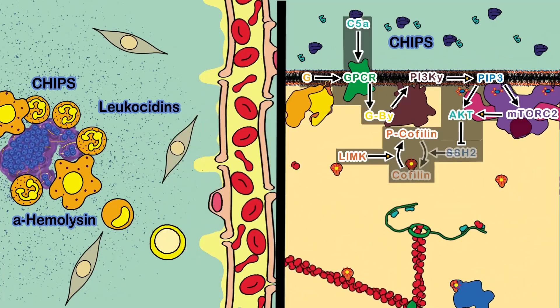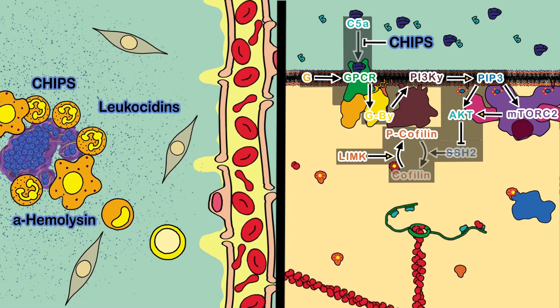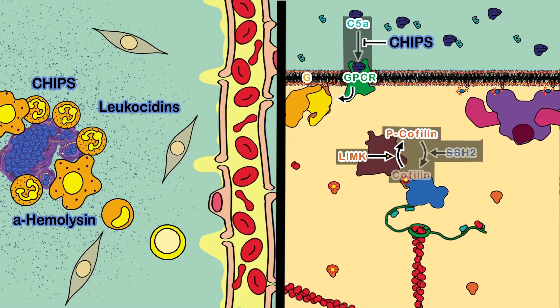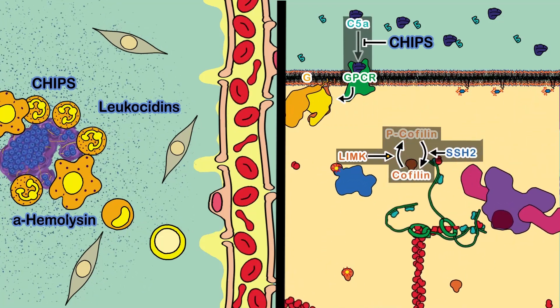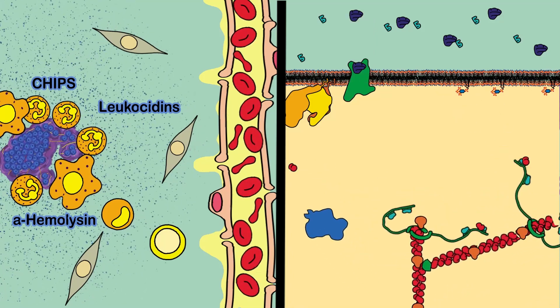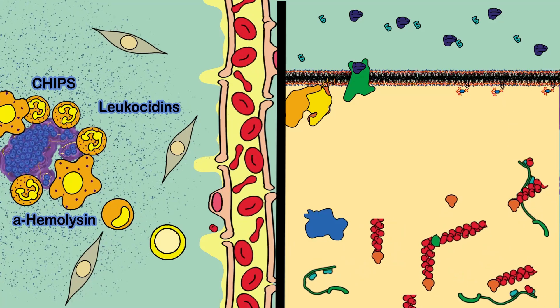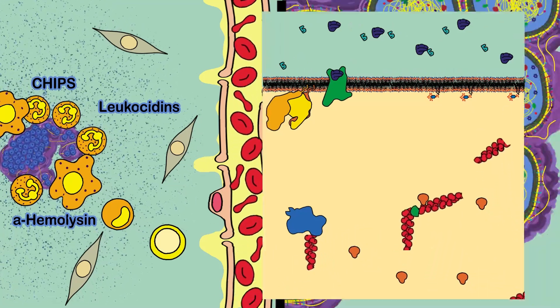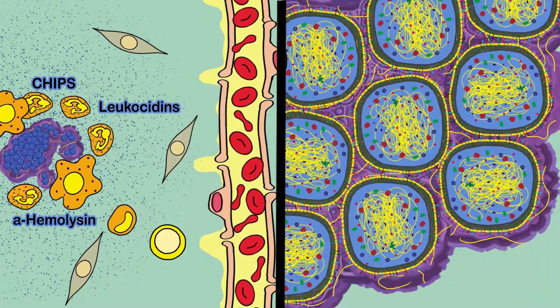One of the virulence factors called CHIPS competitively inhibits several receptors including the C5 receptor, turning down the metabolic pathway that regulates actin cytoskeleton formation. Actin filaments start to collapse, and phagocytes are paralyzed without being able to continue fulfilling their role.